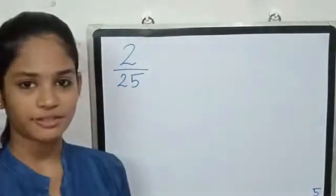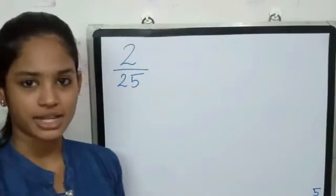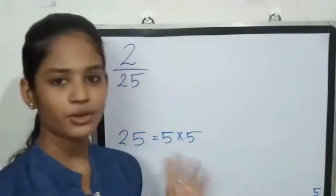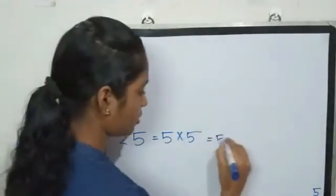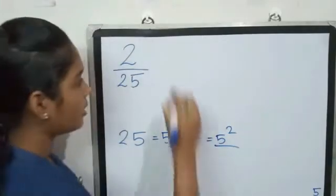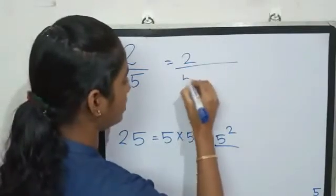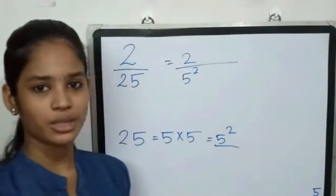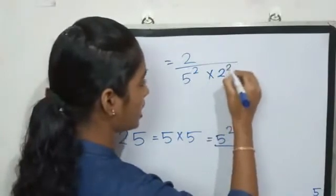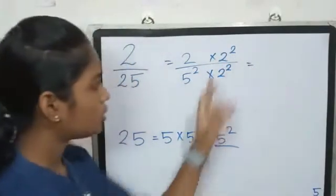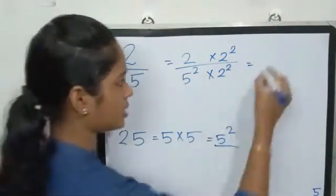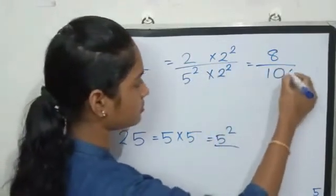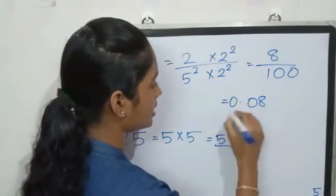Second example: 2 by 25. 25 into 10. 25 into 5 — 5 into 5 is 25. 5 squared is 5 squared. 2 by 25, the denominator is 5 squared. How many times? This is 5 squared, but it's not 2. Now I'm going to make 2 squared. 2 squared is 5 squared — I'm going to make the numerator and denominator. 2 squared is 4. 4 into 2 is 8. By 5 squared is 25, 25 into 4 is 100. Decimal number: